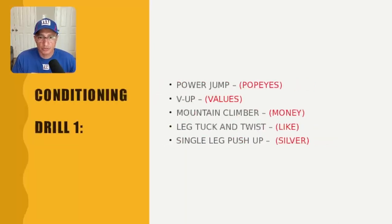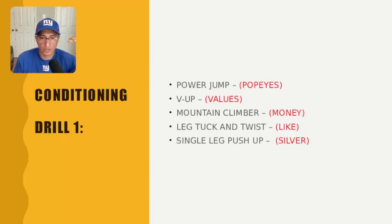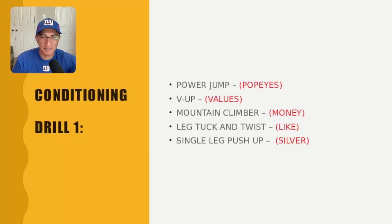The conditioning drill has five exercises: the power jump, V-up, mountain climber, leg tuck and twist, and single leg push-up. The mnemonic is 'Popeye values money like silver.' A tip on the leg tuck and twist: if you're the PRT leader and you take your time getting up, people are going to get upset, because you have to keep your legs six inches off the ground — those three seconds feel like a long time.